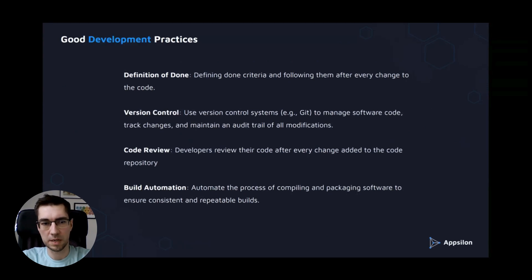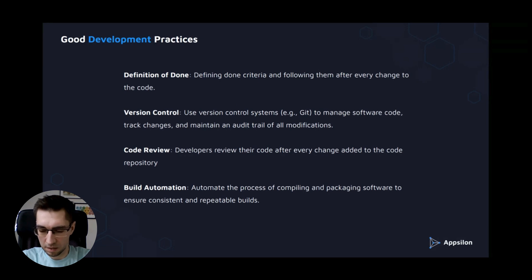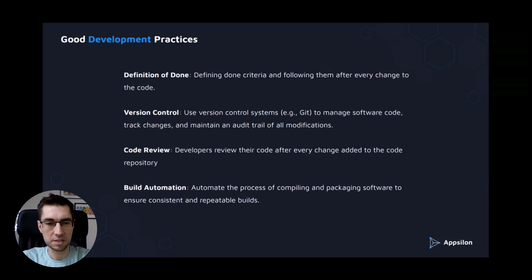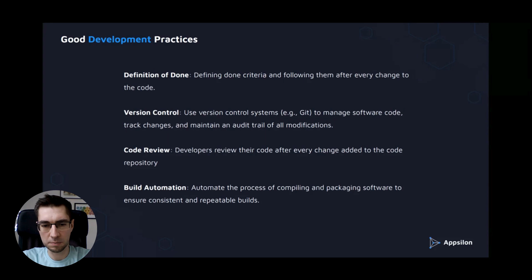What's in good development practices? Everything starts from the definition of done. When you define your done criteria and follow them, you have a quality definition after every change to the code. It's also about version control — you use version control systems such as Git to manage software code, track changes, and maintain an audit trail of all modifications. It's also about code review, so developers review their code after every change added to the code repository. And it's about build automation, so you automate the process of compiling and packaging software to ensure consistency and repeatability.